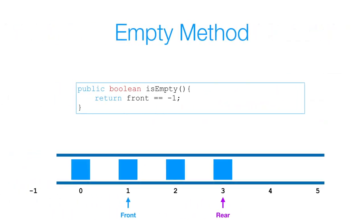Let's move on to the isEmpty method. It's very simple — all I do is return whether or not my front is equal to negative one. We could also check if rear equals negative one, since both front and rear will be set to negative one for an empty queue. If front equals negative one, return true; otherwise return false.